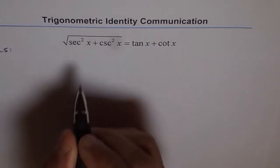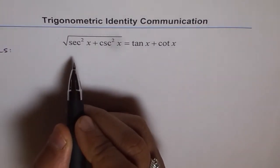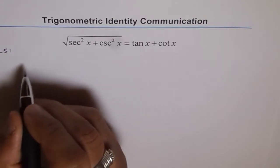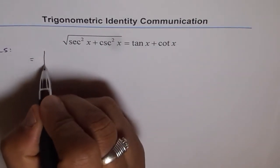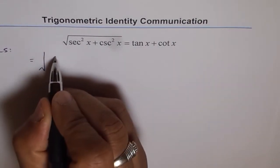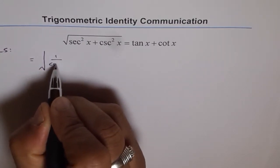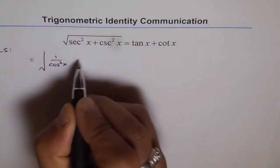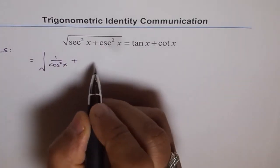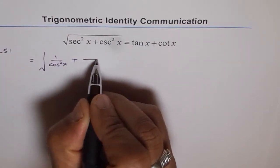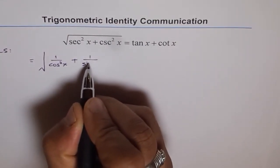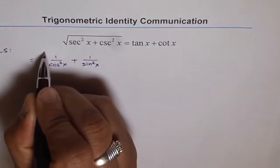We'll start from the left side. That's the first thing. We'll write secant as 1 over cos. So we can write this as square root of secant square x as 1 over cos square x plus cosecant square x is 1 over sine square x, square root.